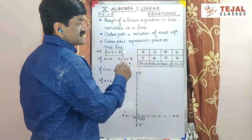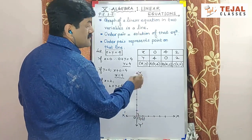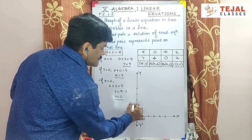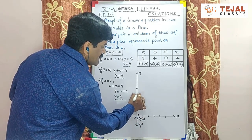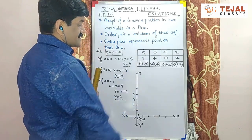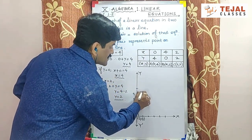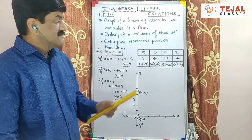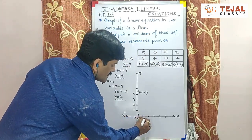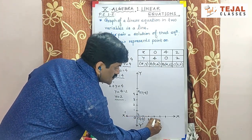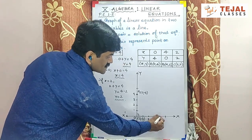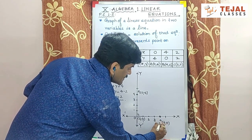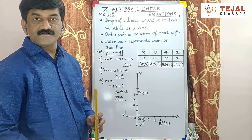अब सबसे पहले point (0,4) plot करते हैं. x-coordinate is 0, so point must be on y-axis. Counting up: 1, 2, 3, 4 — this point is called A (0,4). Second point (4,0): counting on x-axis: 1, 2, 3, 4 — this point is B (4,0).